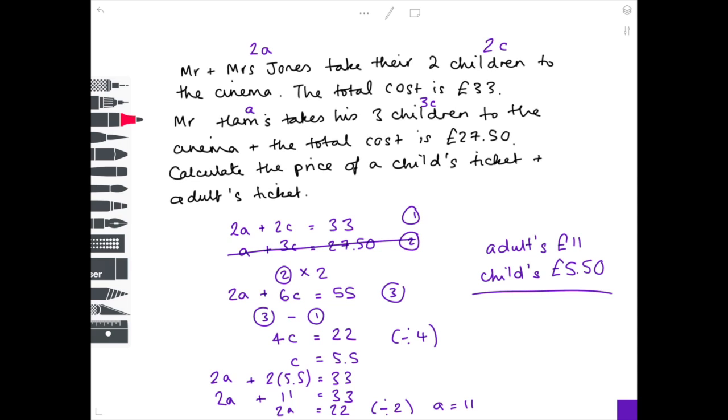And then finally, double check your answer by substituting those values back in. So back into equation 1. So 2A, so 2 lots of adult ticket prices, plus 2C, so 2 lots of child ticket prices. What does that work out to be? Well, it's 22 plus 11 equals 33, which matches equation 1, so I know my answer is definitely right.